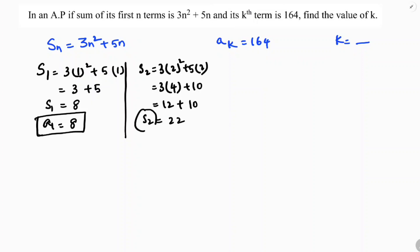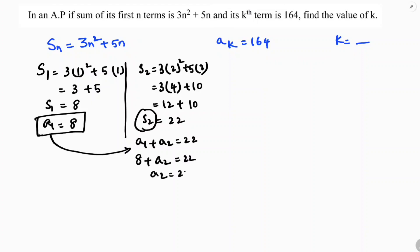S2 means the sum of the first two terms, so first term plus second term equals 22. I already found the first term, so substituting: 8 plus A2 is 22, therefore A2 is 22 minus 8, which gives A2 equals 14.